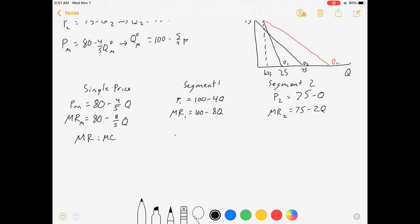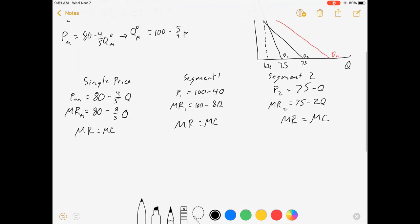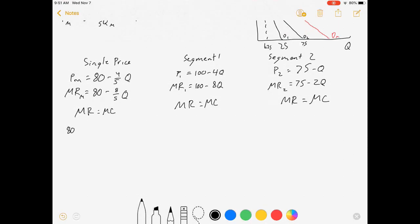So let's set marginal revenue in all of these cases equals marginal cost. That's 80 minus eight-fifths Q equals 10. That's 100 minus 8Q equals 10. That's 75 minus 2Q equals 10. Notice, they all face the same cost function. It doesn't cost the firm any different to serve someone in segment two as it does from segment one.